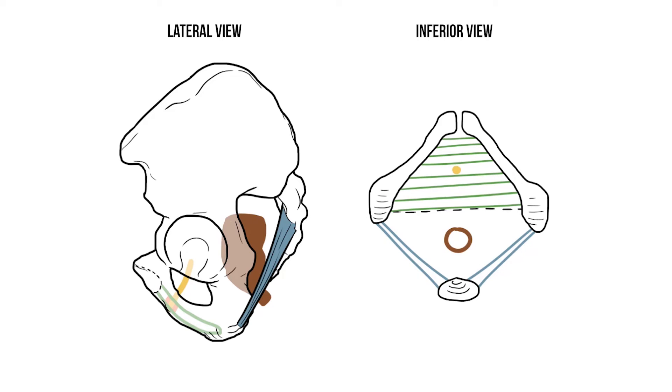In the male pelvis we'll also find bulbourethral glands. These release a pre-ejaculate fluid that neutralizes the normal acidity of the urethra in preparation for sperm to travel along it.